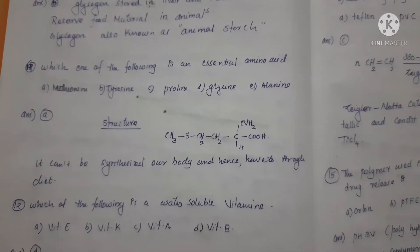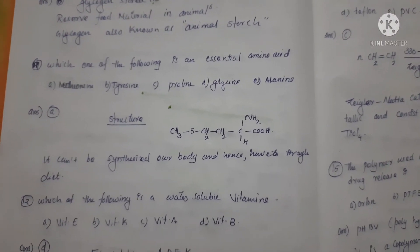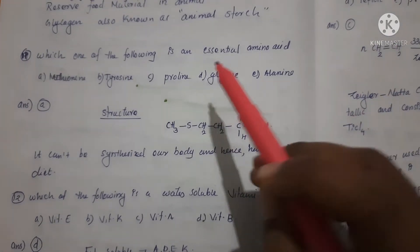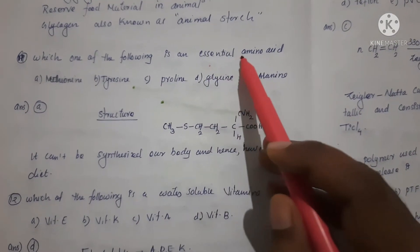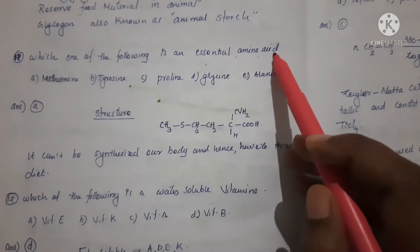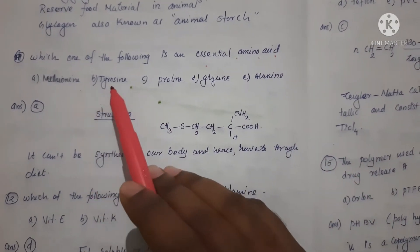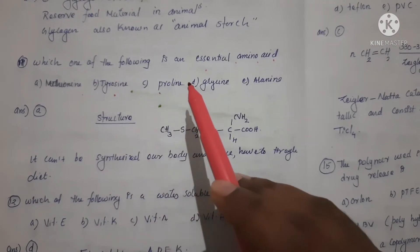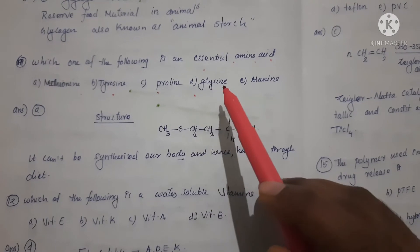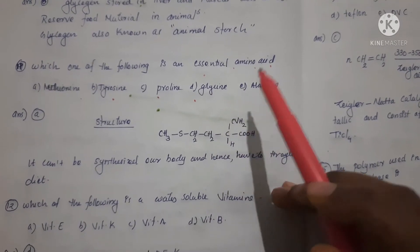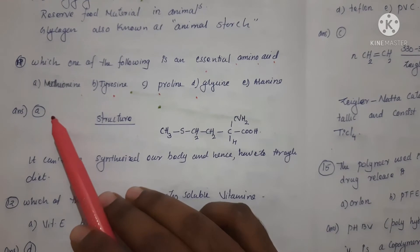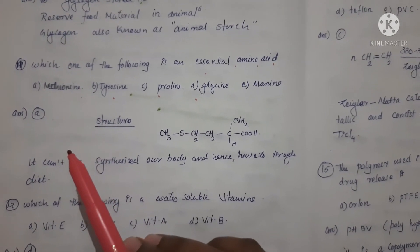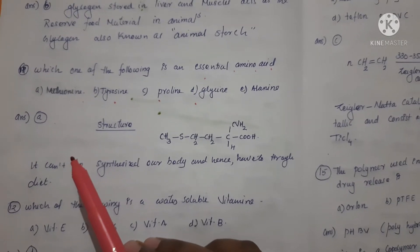So in this video, we'll discuss practice questions. First question: which one of the following is an essential amino acid? Option A: methionine, Option B: thyroxine, Option C: protein, Option D: glycine, and Option E: alanine. Correct answer is Option A, methionine.